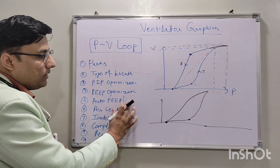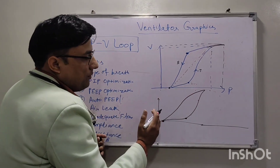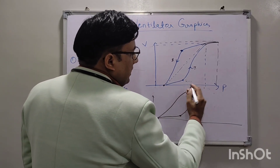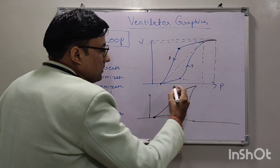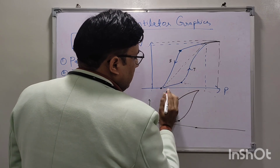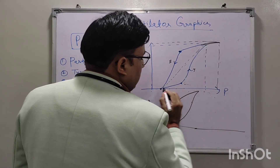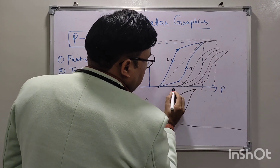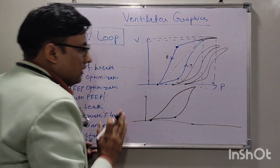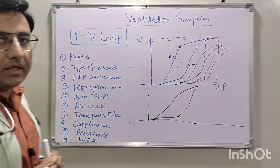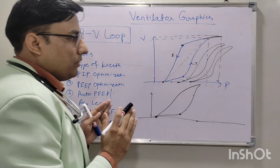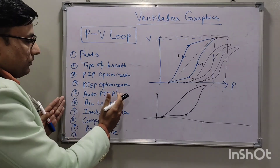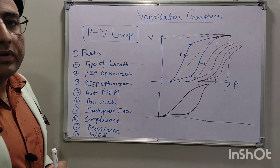We can also detect auto-PEEP or air trapping in this graphic. In auto-PEEP, air trapping is happening and slowly the PEEP will increase. By watching the trend of graphics, if auto-PEEP is generating, the graph will shift progressively to the right — the PIP point shifts to the right side. This means air trapping is happening. We need to increase the expiratory time or decrease the PEEP to manage this.